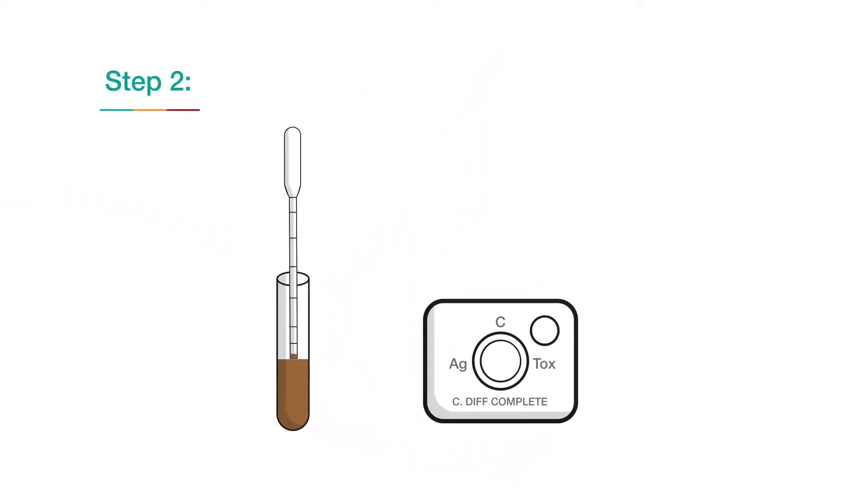Using a new, graduated transfer pipette, transfer 500 microliters of the diluted specimen to the small sample well on the Quick Check device.